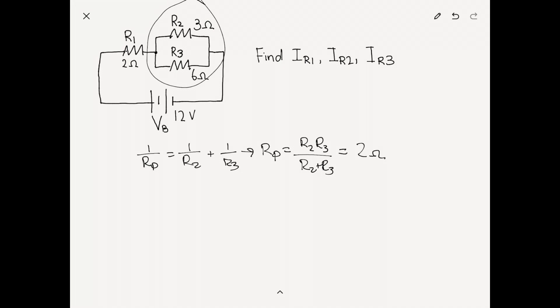Now that we want to find the current at R1, we can easily do so, because the current at R1 is simply the voltage at B divided by the total resistance, which is, in this case, R1 plus Rp.